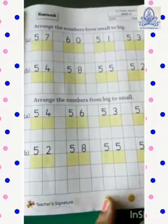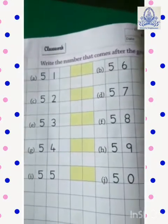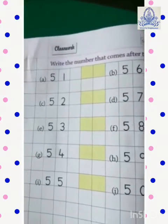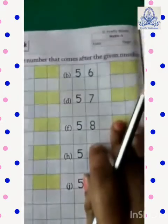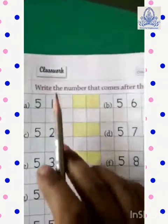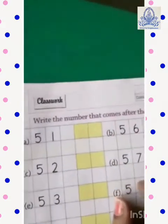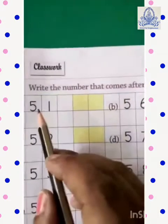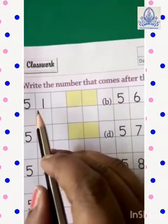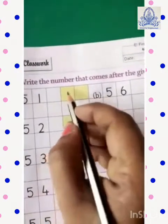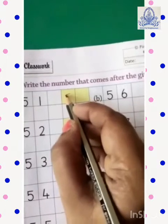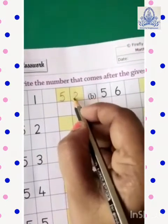Okay. Now, turn the page and take out page number 51. What we have to do over here? Write the numbers that come after the given numbers. जो भी given number के बाद में आते हैं, वो हम लोगों को करना है. Chalo, let's start. What comes after 51? Yes, very good. It's 52, 52.